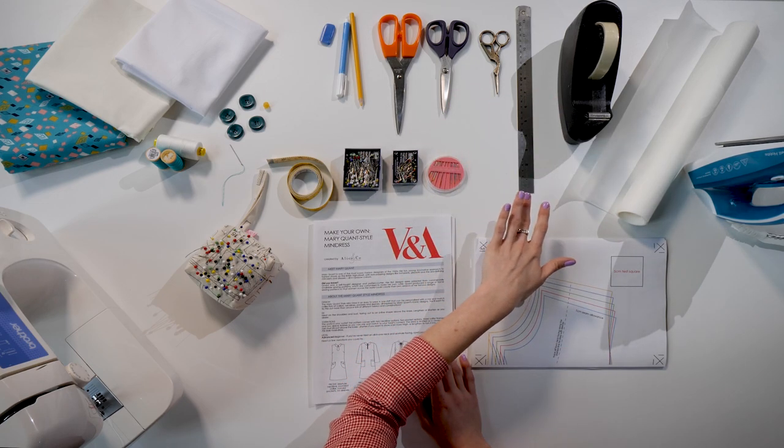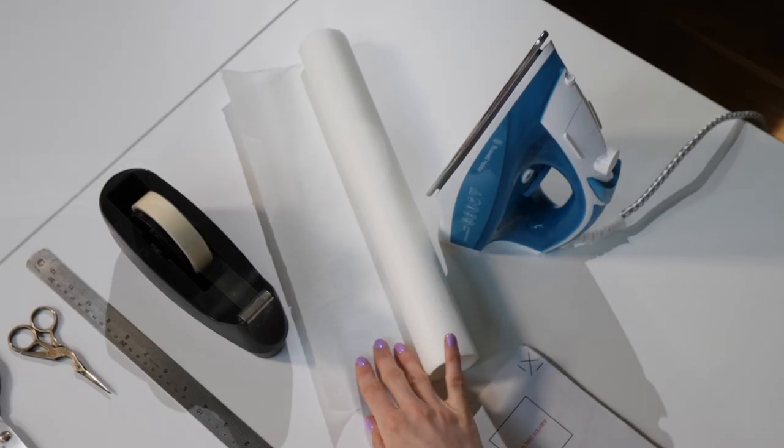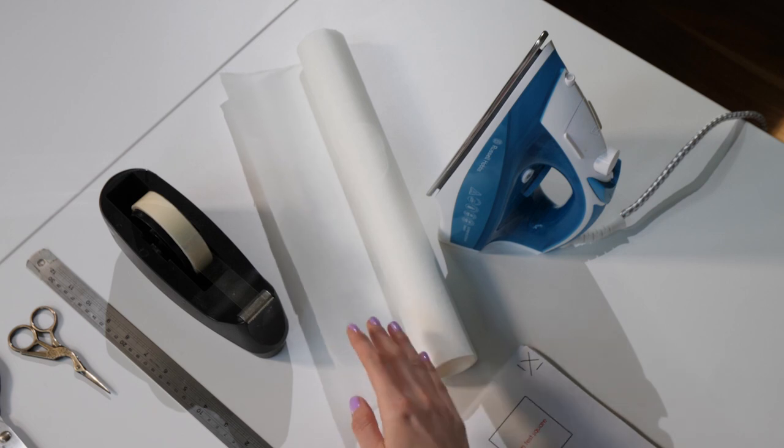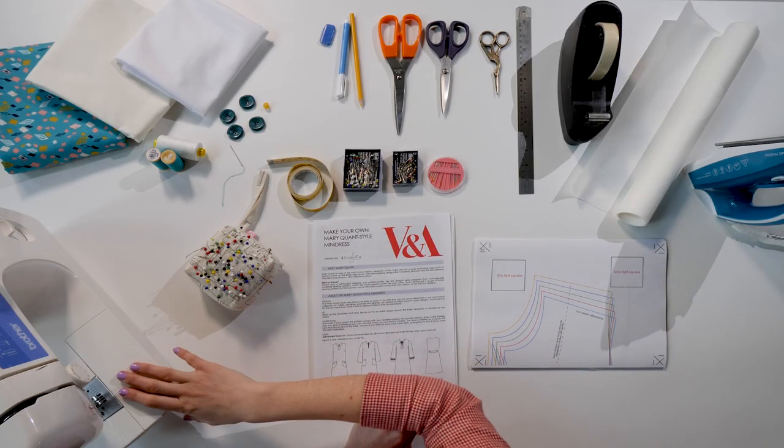A ruler and some sellotape and then some tracing paper. This is just a roll of baking parchment which you can buy in any supermarket. You'll also need an iron and of course a sewing machine.